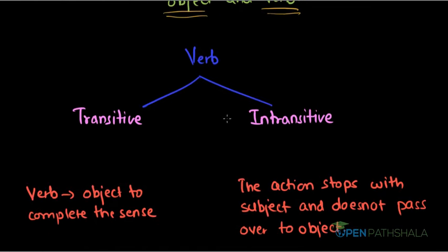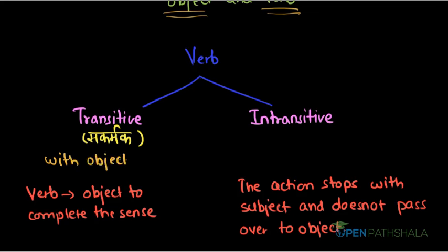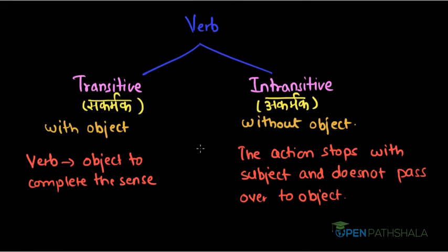Verb is basically divided into two main types: transitive and intransitive. In Sanskrit, transitive is called sakarmak — meaning 'with object,' because karma means object. Intransitive is called akarmak, meaning 'without object.' In the case of a transitive verb, it needs an object to complete the sense. In the case of an intransitive verb, the object is not needed; the action stops with the subject only and does not pass over to an object.